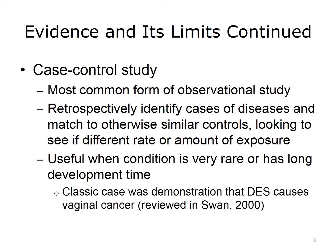A case-control study is the most common form of observational study, and it's the most common type of study done to assess harm. There are times when we suspect that something is harmful, and we want to find out as quickly as possible. We can't do a prospective study because it might take years to get results, so we look retrospectively. We identify cases of the disease that we think are caused by the harmful agent, and then we match them to controls. Then we look at the two groups to see if there's a different rate or amount of exposure.